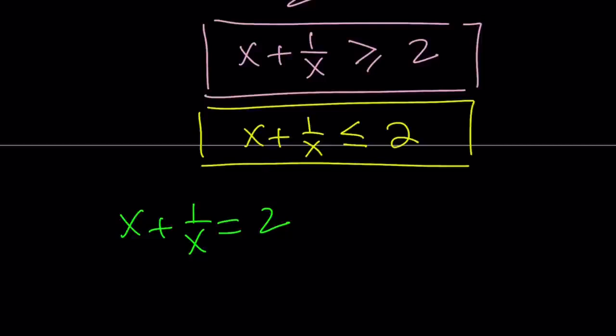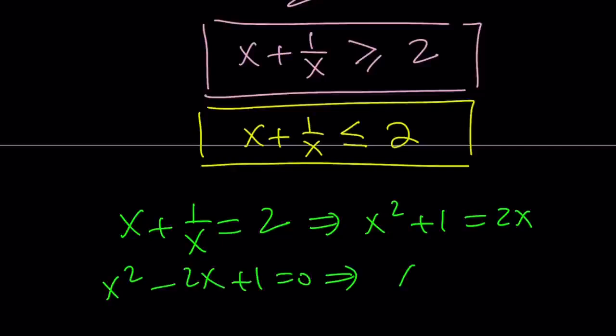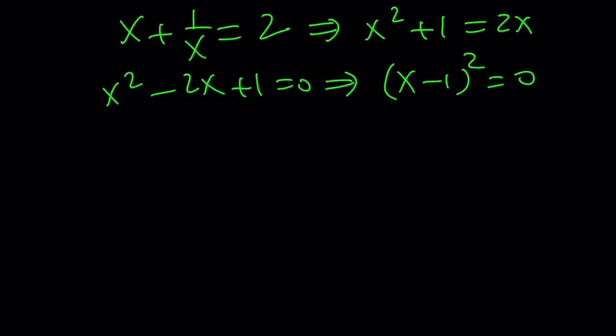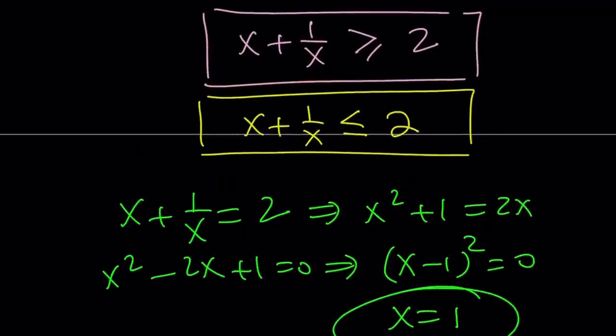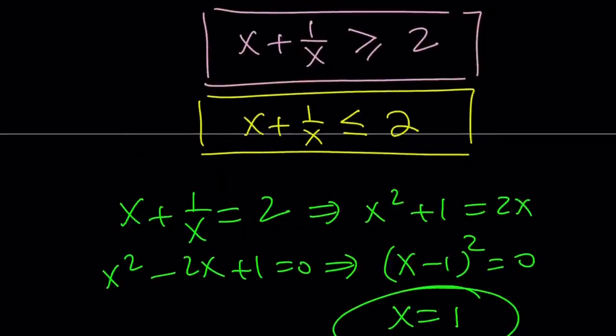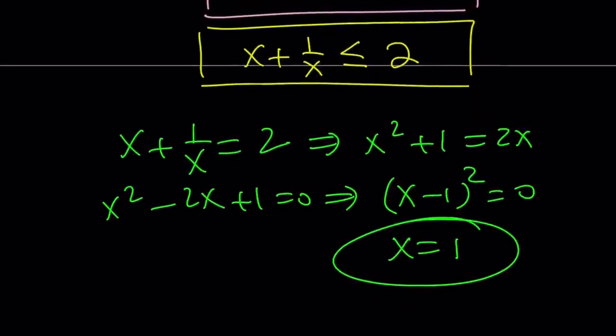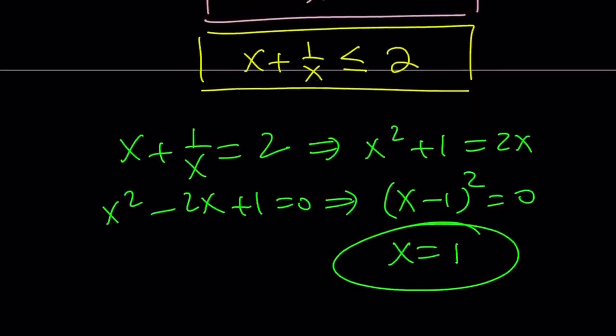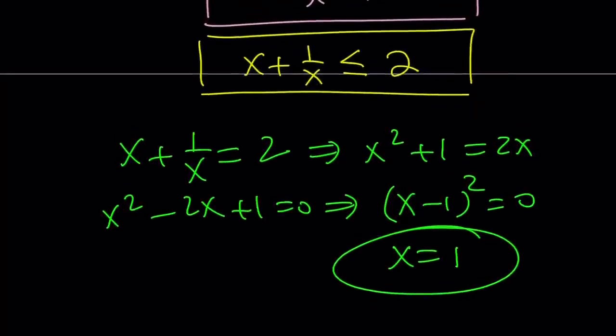And this means the following. Let's go ahead and solve this. If you multiply both sides by x, you get x squared plus 1 equals 2x. Then this gives us x squared minus 2x plus 1 equals 0. But this just implies x minus 1 quantity squared is 0. And that means x equals 1. So that gives us a unique solution for both of these inequalities to be true at the same time. So x equals 1 seems to be the only solution.